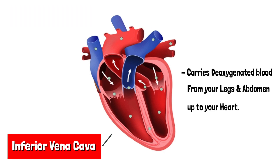The inferior vena cava — this carries deoxygenated blood from your legs and abdomen up to your heart.